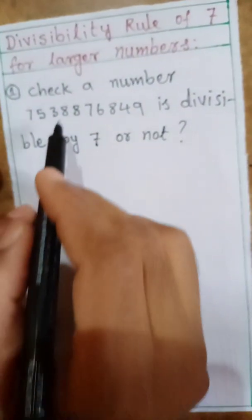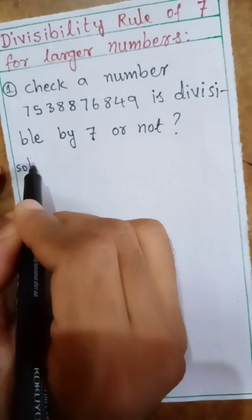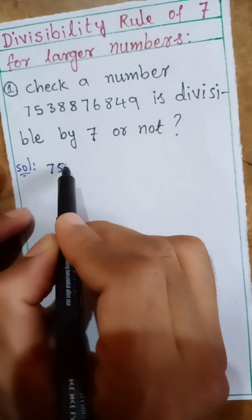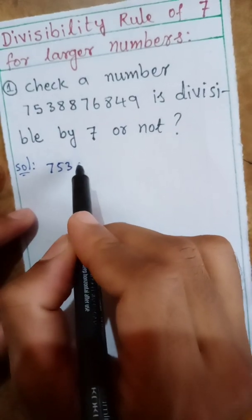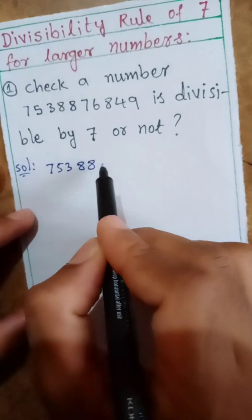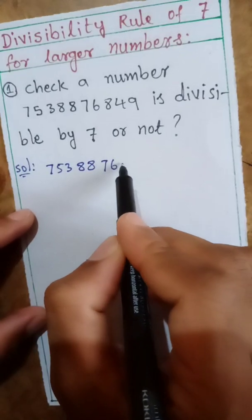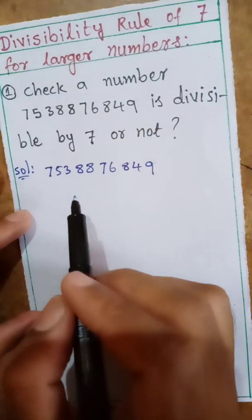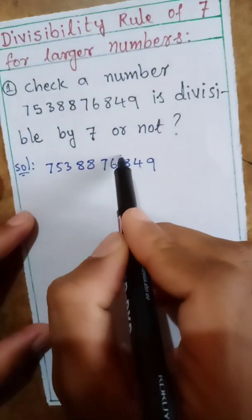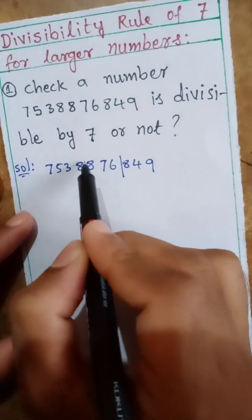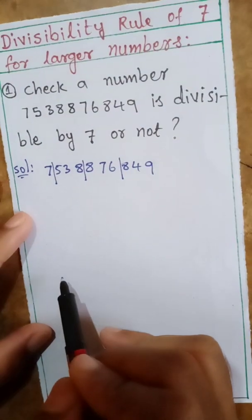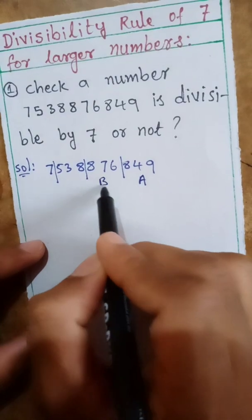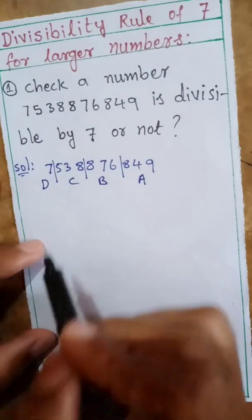So here, first write the given number: 753 crores 88,76,849. Now divide it into groups of 3 digits each — group 1, group 2, group 3. Label them A, B, C, and D.